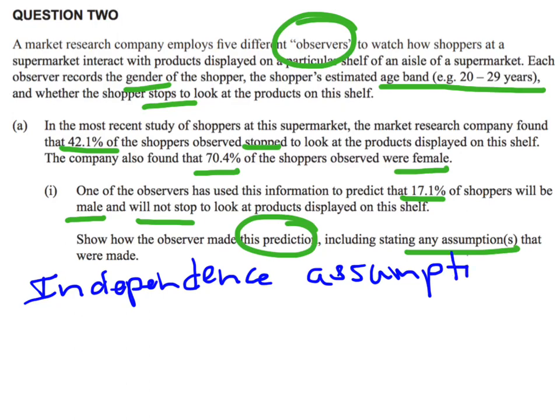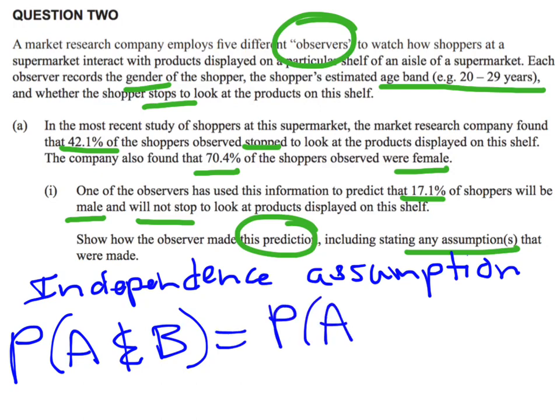So let's think about what is the independence assumption. The general rule is that the probability of A and B occurring is equal to the probability of A times the probability of B. We could also talk about conditional probability, but in this particular case I'm going to use this because I've just been given some straightforward probabilities.